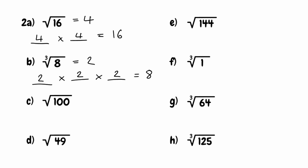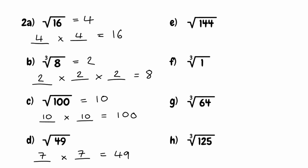For part c, we've got the square root of 100. We're looking for a number that when multiplied by itself twice gives us 100 — that would be 10, because 10 times 10 is 100. For part d, we're looking for the square root of 49 — that would be 7, so the square root of 49 is 7. Moving on, we've got the square root of 144. The number that when multiplied by itself twice gives us 144 is 12, so the square root of 144 is 12.